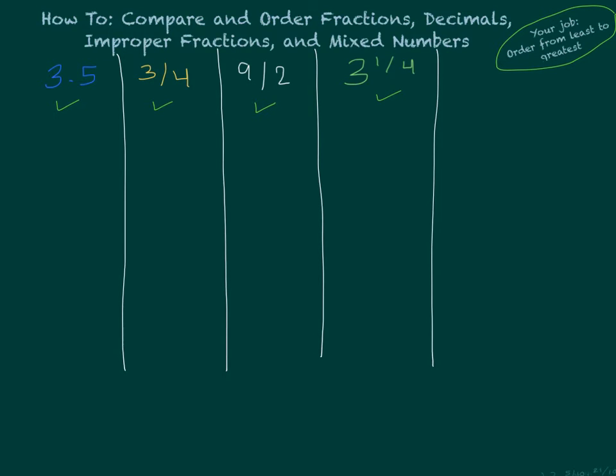And we know right away that in order to compare and then eventually order them from least to greatest, we want to get them looking to be alike. So we want them to look alike, or the same form. So right now we have decimals, we have improper fractions, we have mixed numbers, so let's just get them all into fractions.